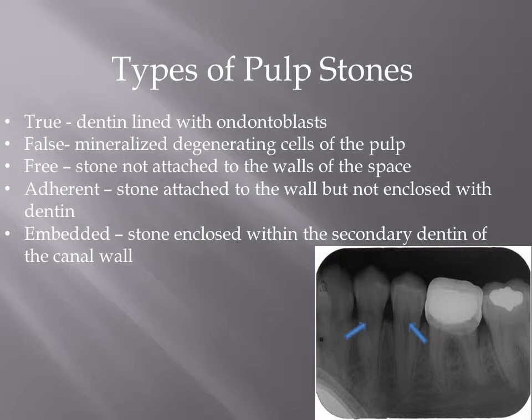Free pulp stones are stones not attached to the walls of the pulp space. Adherent pulp stones are stones attached to the wall but not enclosed with dentin. Embedded pulp stones are stones enclosed within the secondary dentin of the canal wall.